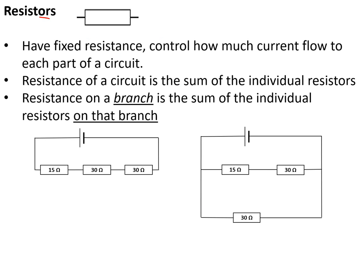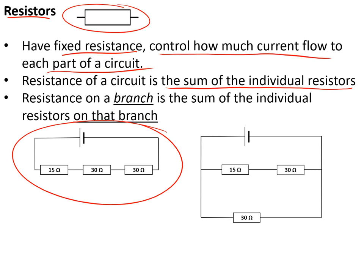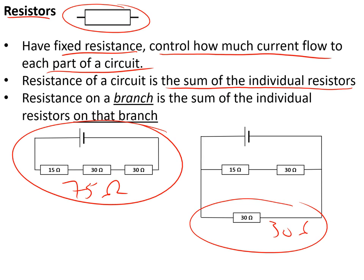A resistor has a fixed resistance and controls how much current flows to each part of a circuit. The resistance of a circuit is the sum of the individual resistors. So in a series circuit, the total resistance is the sum of all resistors — for example 30 + 30 + 15 = 75 ohms. In a parallel circuit, each branch has its own resistance — for example one branch with one 30-ohm resistor, another with two resistors adding up to 45 ohms.